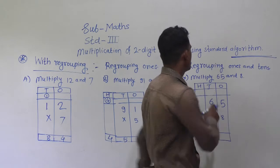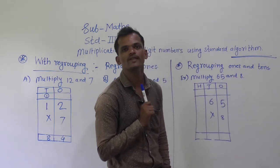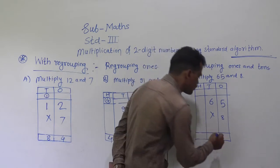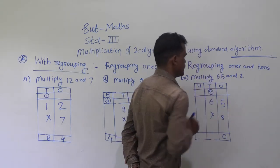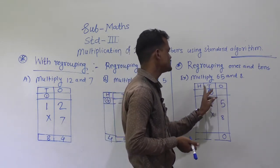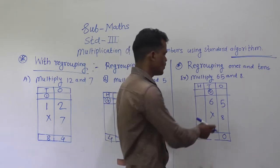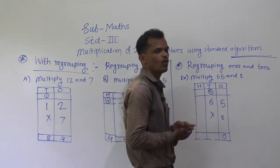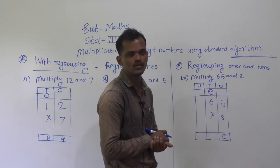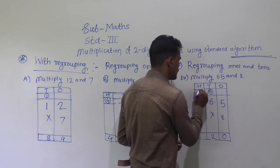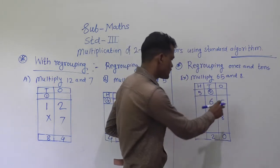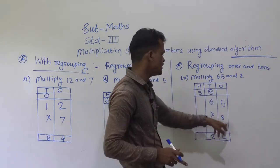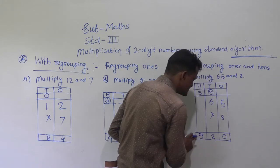See here: regrouping ones and tens — multiply 65 and 8. Start from the ones place. 8 fives are 40, so write 0 here and carry 4 to the tens place. Next step: multiply the tens place digit by 8. 8 sixes are 48, plus the carry of 4 makes 52. Write 2 here and carry 5 forward. Now, there is no digit in the hundreds place, so consider 0. 8 into 0 is 0, plus 5 gives 5. So, the answer is 520.